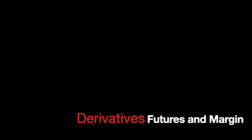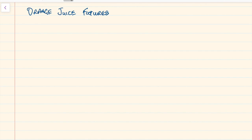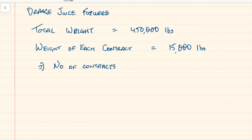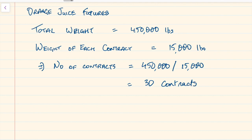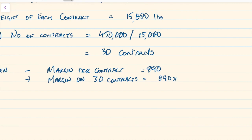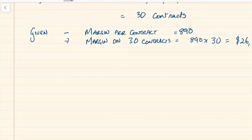Now we're going to look at derivative futures. In this example we're looking at orange juice futures. The total weight of orange juice futures being considered is 450,000 pounds. Each contract in the official market is 15,000 pounds of frozen orange juice. Dividing 450,000 by 15,000 tells us we have 30 contracts. The margin per contract is $890, so the total initial margin on 30 contracts is $26,700.